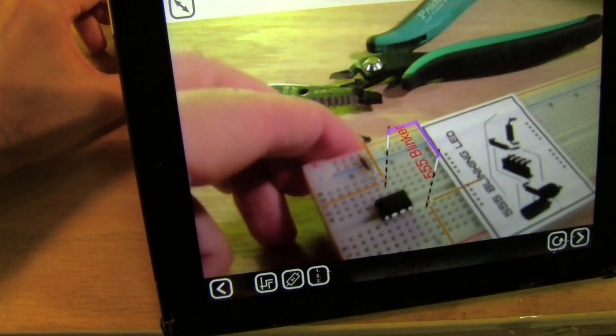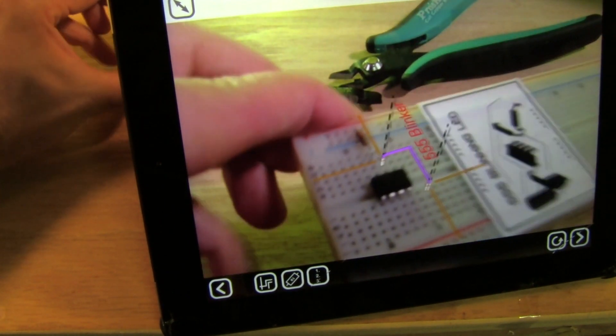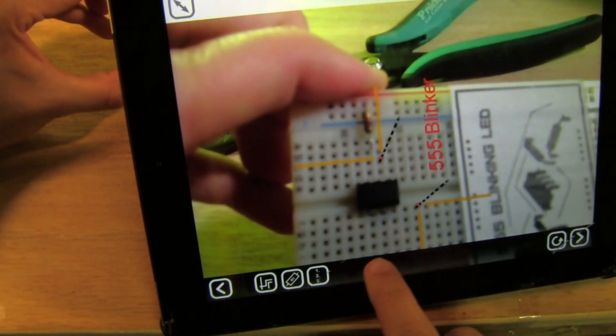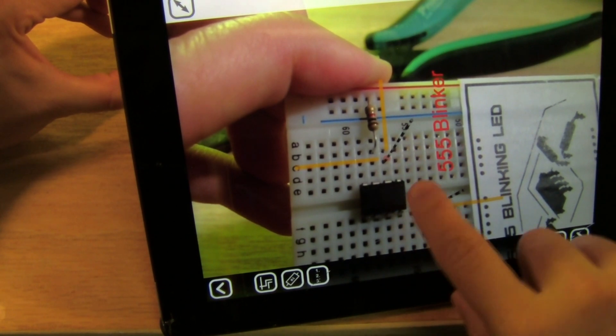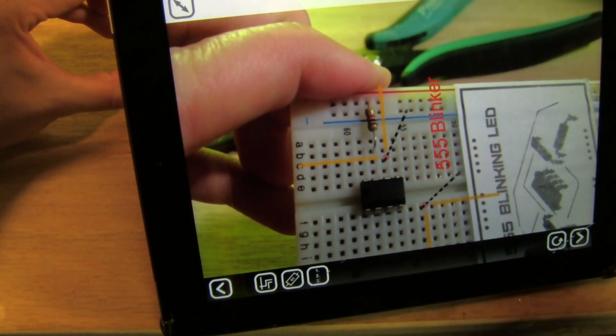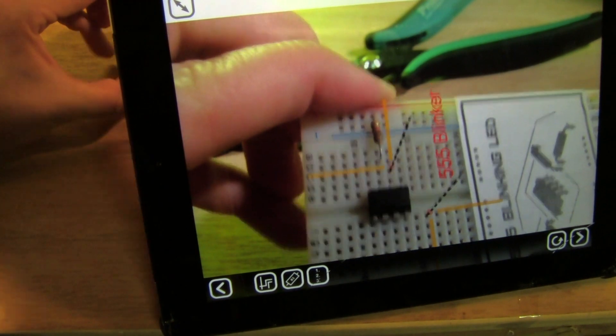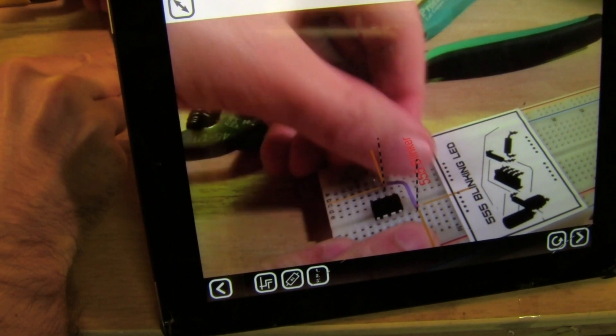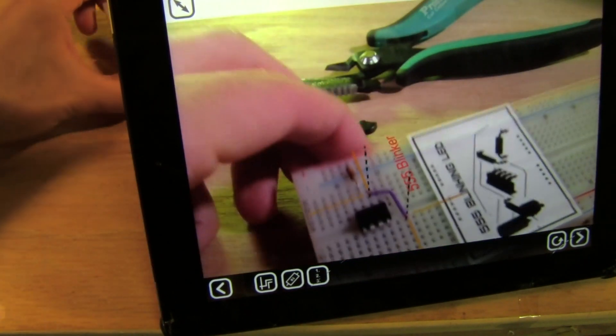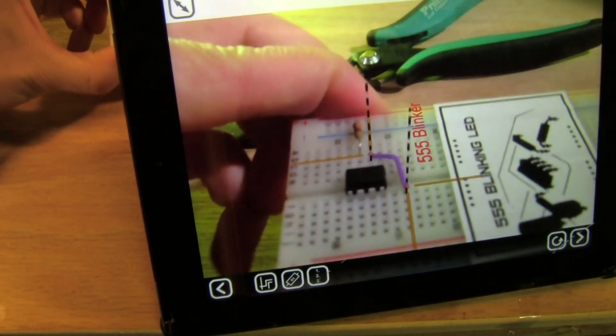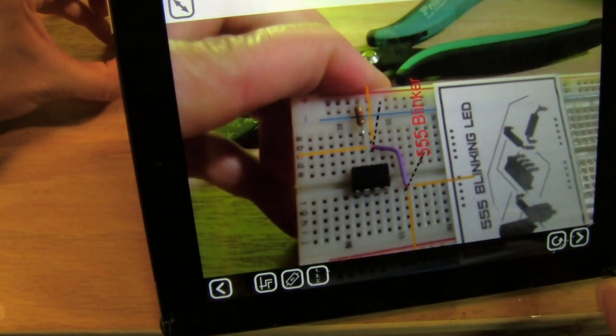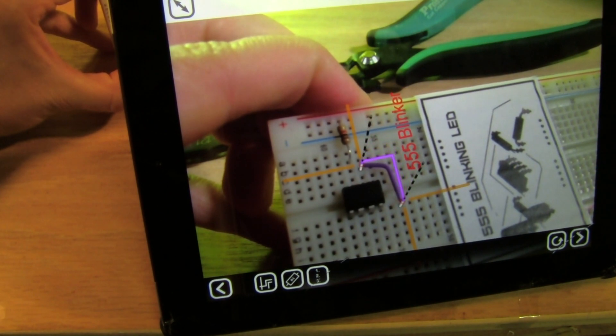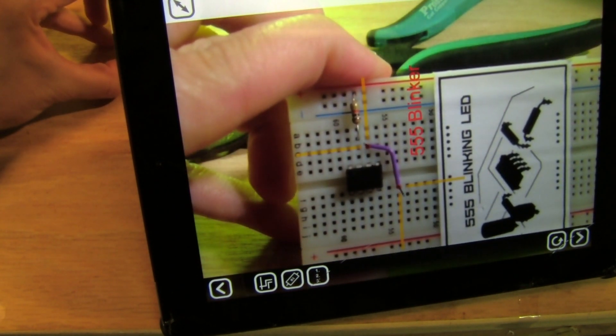And then this next step is a wire. So I can see it's coming in at the 6 pin of the IC. And that looks good.